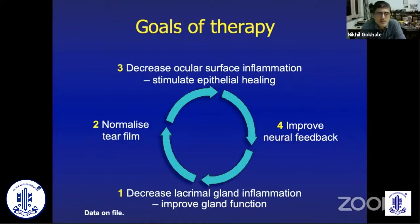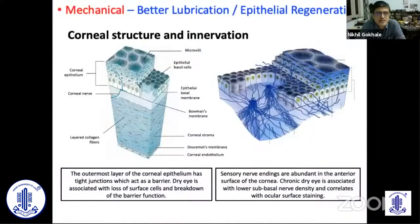The corneal epithelium is a tight epithelium with glycocalyx on the surface and tight junctions, which create a barrier effect. The ocular surface is richly supplied by the sub-basal nerve plexus in the cornea. When we have a patient with chronic dry eye, there is a loss of nerve density, and this correlates with the ocular surface staining in these patients.